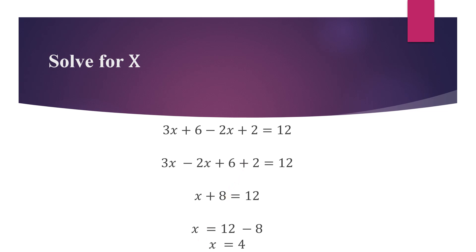When we move the 8 over the equal sign the sign changes to minus 8, so x equals 12 minus 8. The answer is x = 4. Look out for our next video on subject of the formula, and also for our videos on CXC past paper questions in math on subject of the formula and on algebraic fractions. Thank you very much.